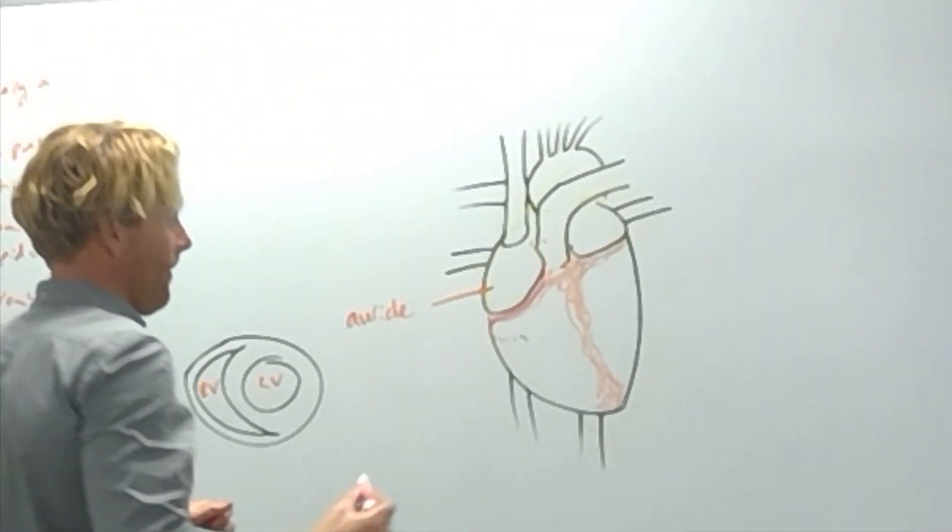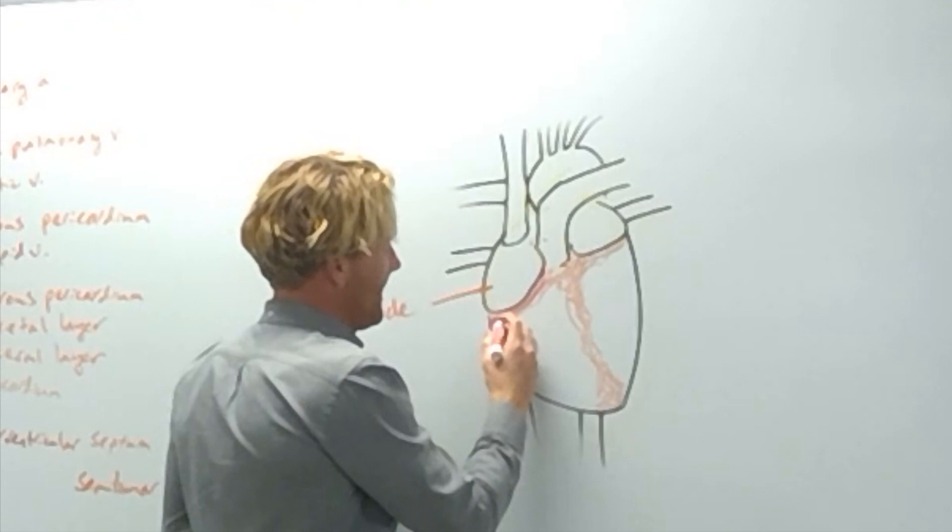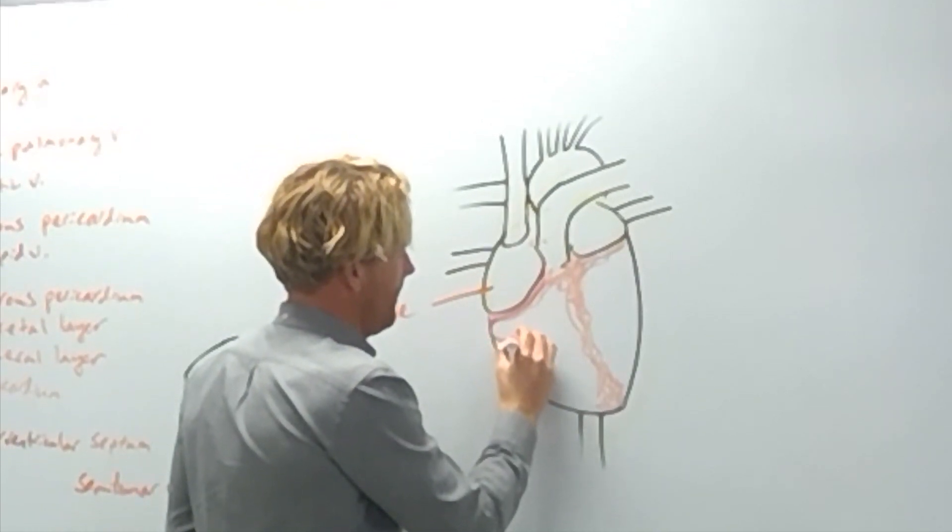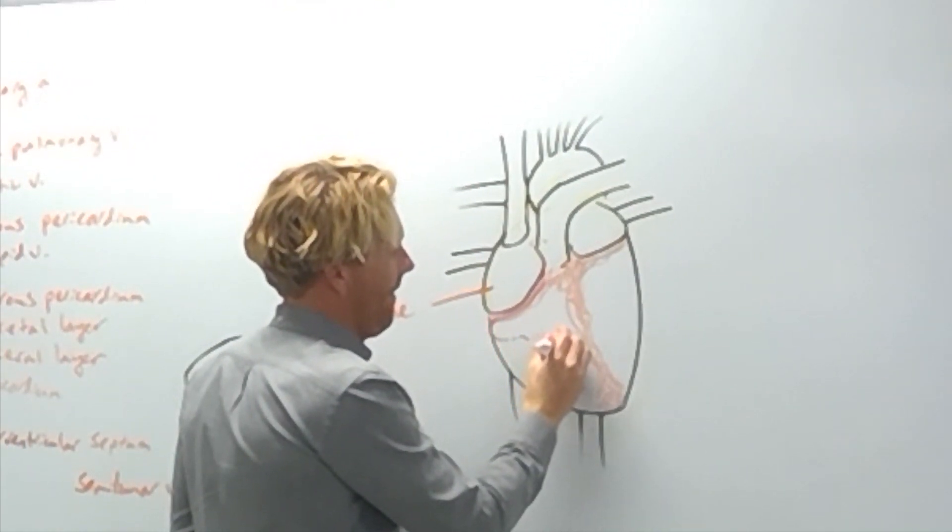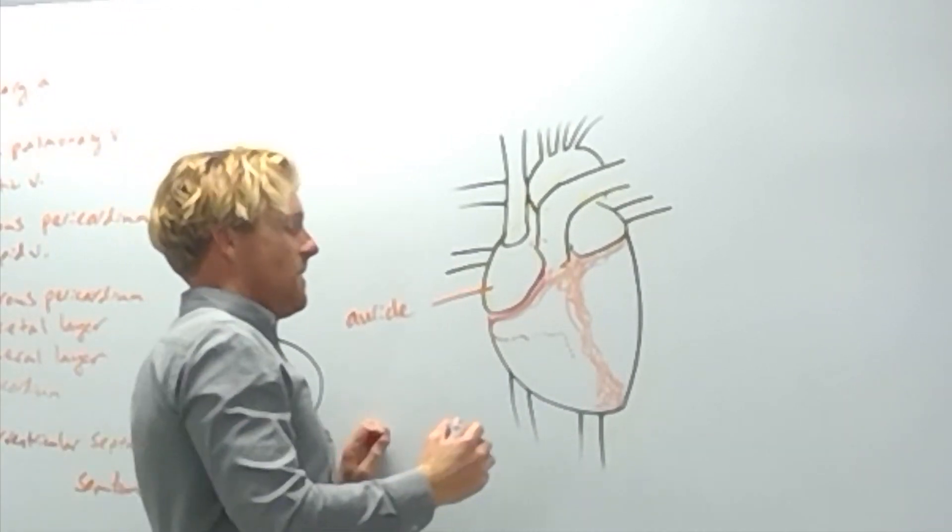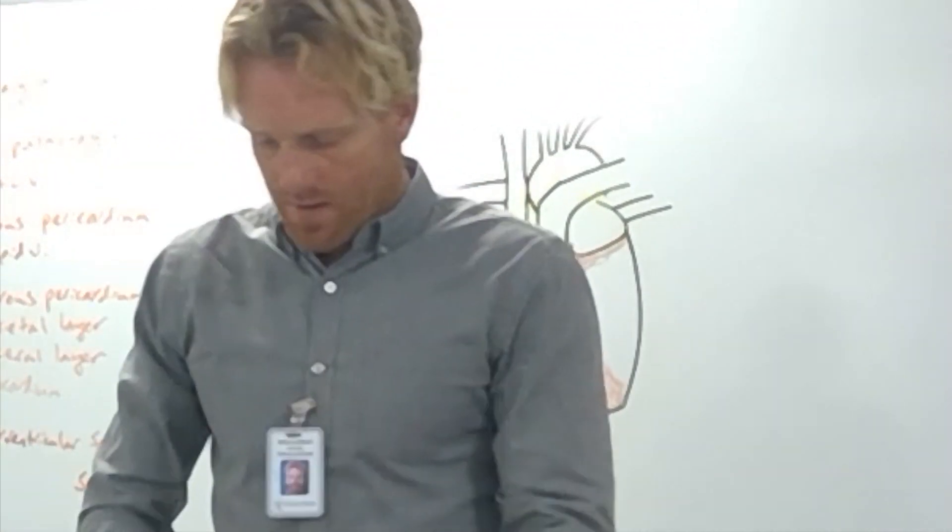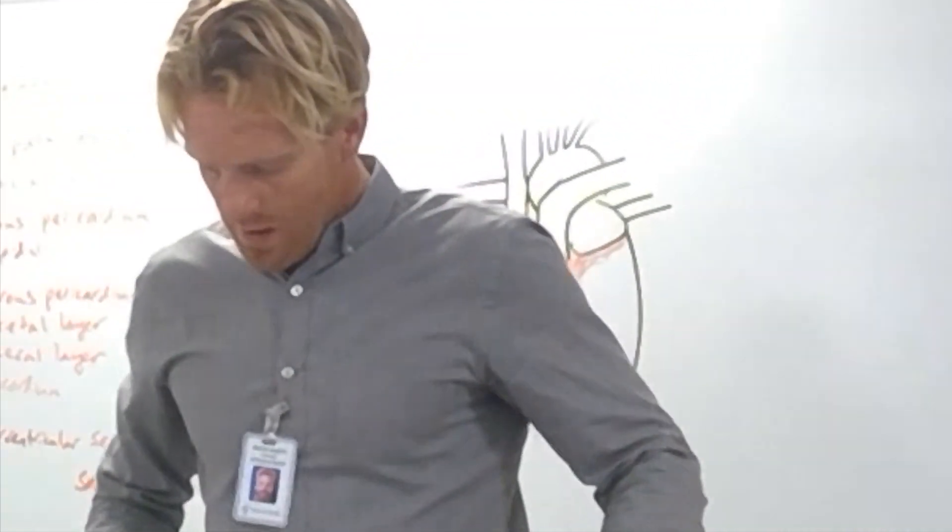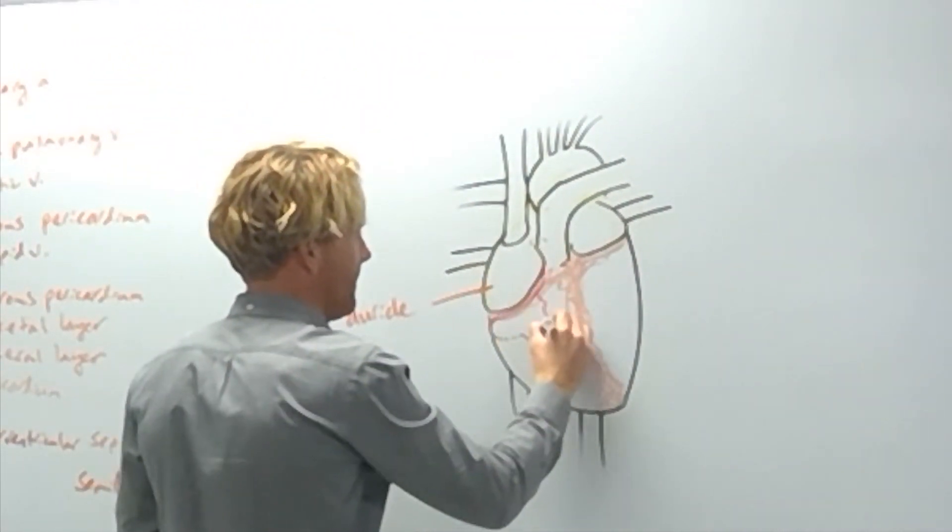So this right coronary artery is going to come around like this, wrap around the heart, and go in this direction. Let me make sure I'm right there. I feel like I'm missing a part. Yeah, that's right. He just has all these extensions that kind of come down as well.